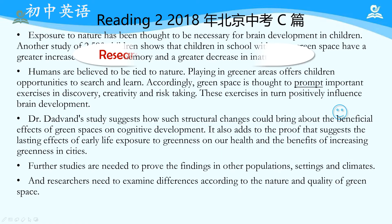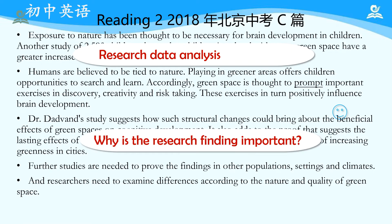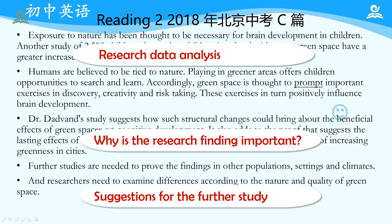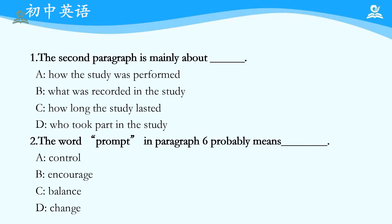这三大部分之后，后续内容是在进行research data analysis，说明Why is the research finding important? 最后也提到了suggestions for further study: researchers need to examine differences according to the nature and the quality of green space. 接下来看题目。第一题讲的是How the study was performed，需要大家对说明文常见架构有整体把握，同时对这一段进行详细总结。